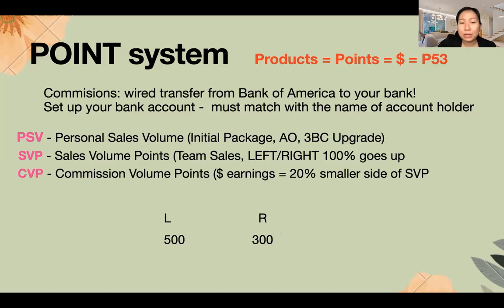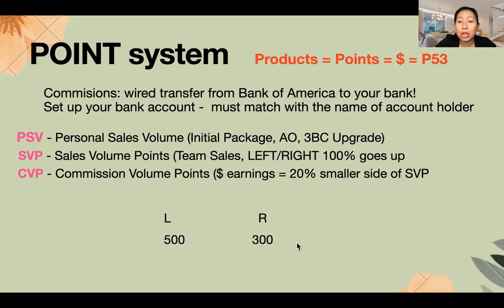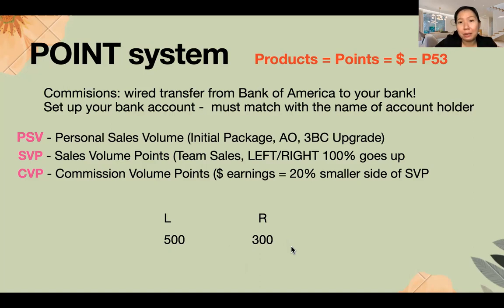CVP is Commission Volume Points — this is your dollar earnings. CVP equals 20% of the smaller side of your SVP. For example, if you have 500 points on the left and 300 points on the right, you look at the smaller side which is 300. Multiply 300 by 0.20, and your income is $60. If one side is zero, your income is zero. That's why we balance the points — your upline will guide you on where to place new teammates.